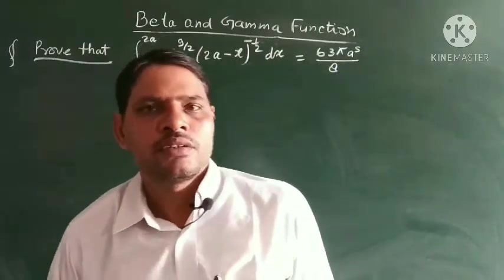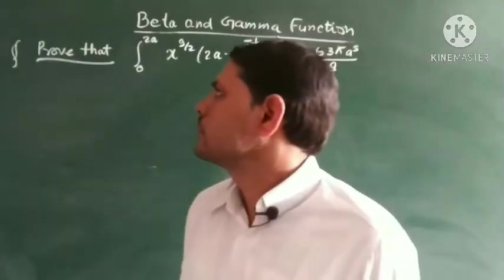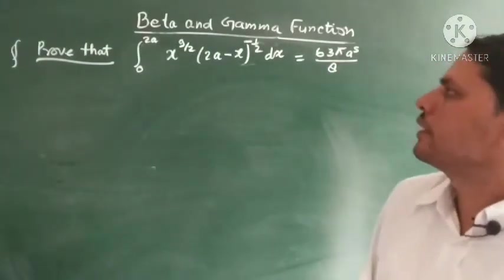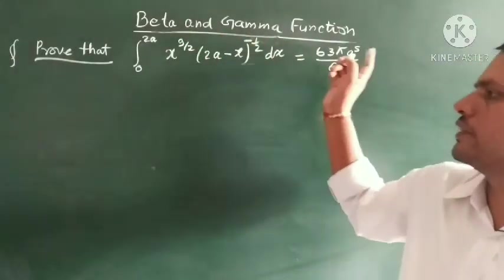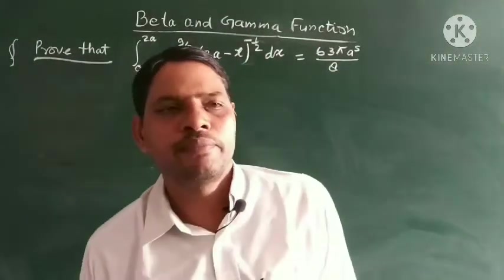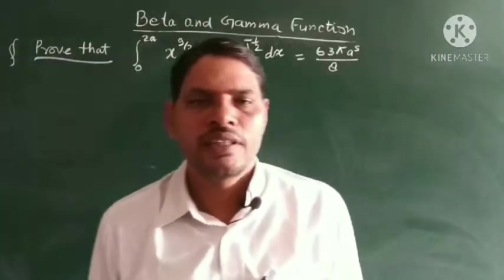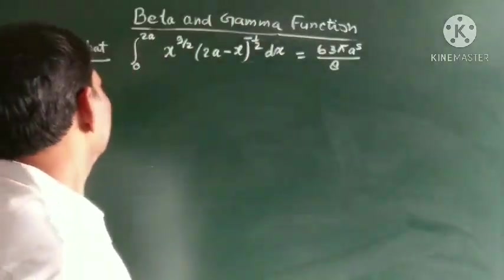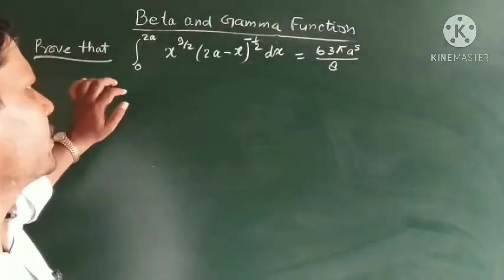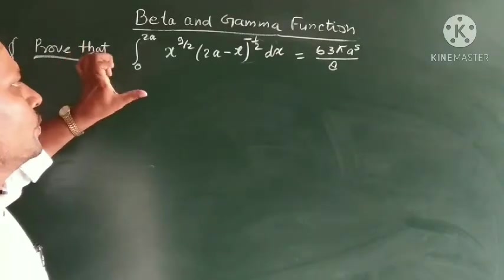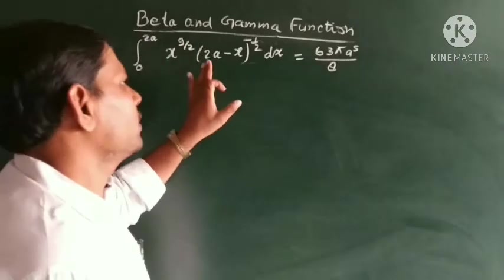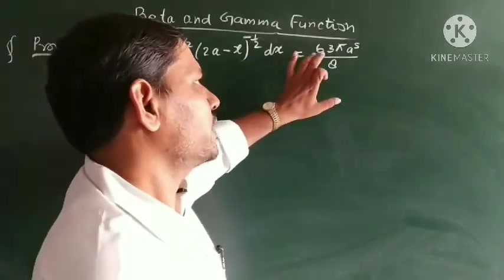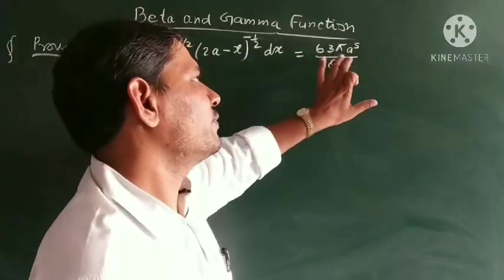Hello everybody, today we discuss the part of advanced calculus on the integral beta and gamma function. If you have any problem in the recording of the previous lecture, comment it. Now, the problem says that the integral of 0 to 2a of x to the power 9/2, within bracket (2a minus x) whole to the power minus half dx equals 63π a to the power 5 upon 8.